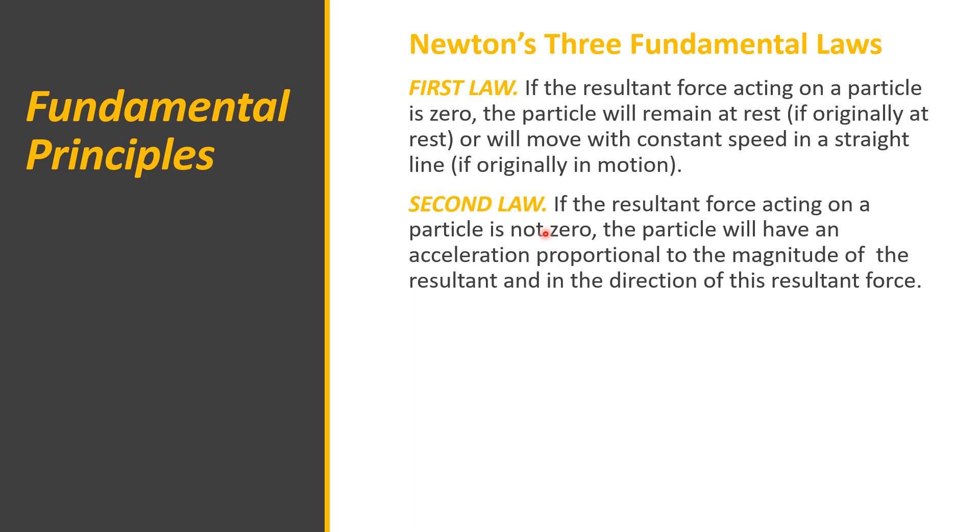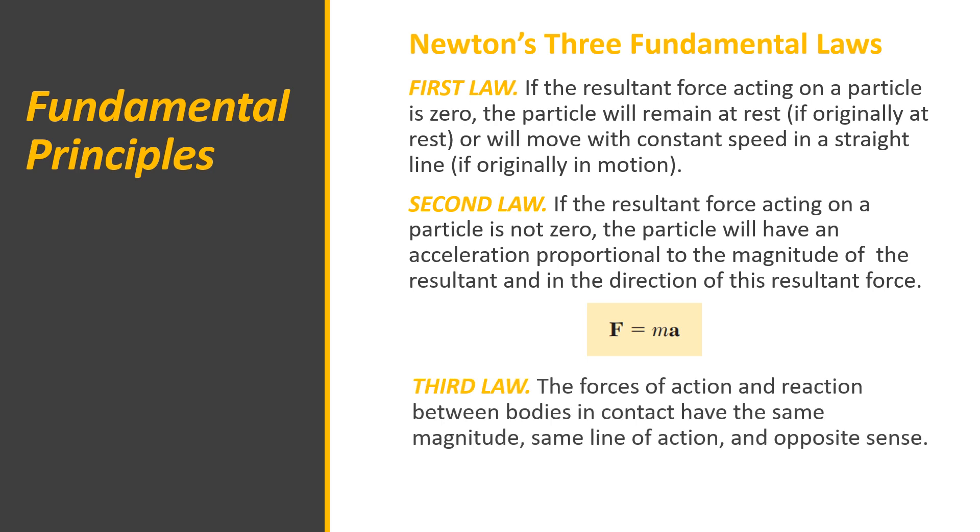Second law: if the resultant force acting on a particle is not zero, the particle will have an acceleration proportional to the magnitude of the resultant and direction of this resultant force. The formula for this is force is equal to the mass multiplied by the acceleration. That's Newton's second law.